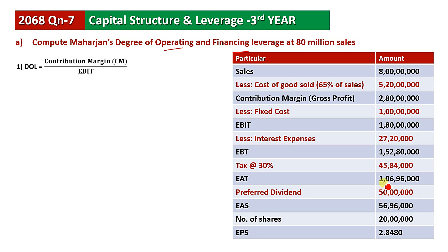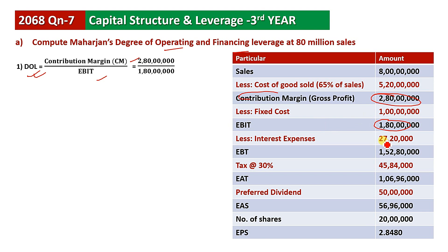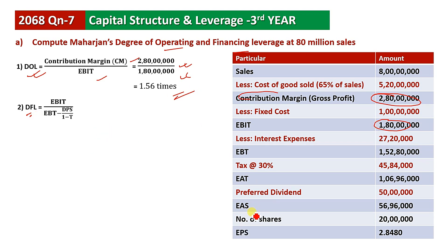The degree of operating leverage is contribution margin divided by EBIT. Contribution margin is 28 million divided by EBIT of 18 million. 28 million divided by 18 million equals 1.56. The answer is 1.56.